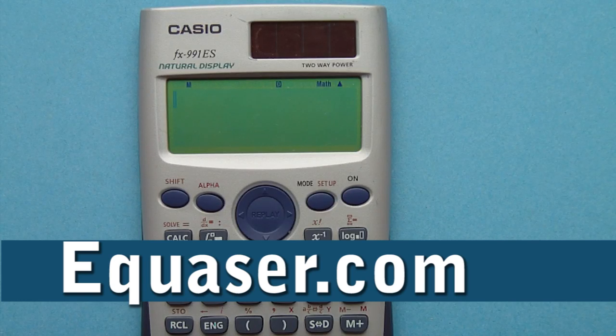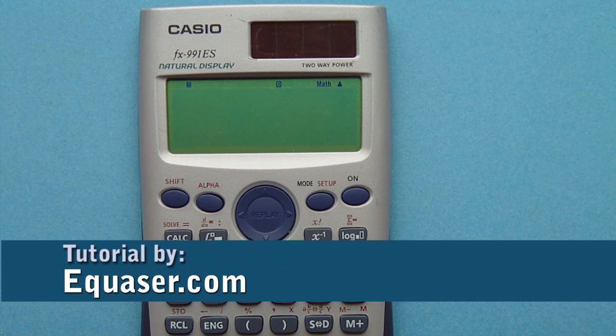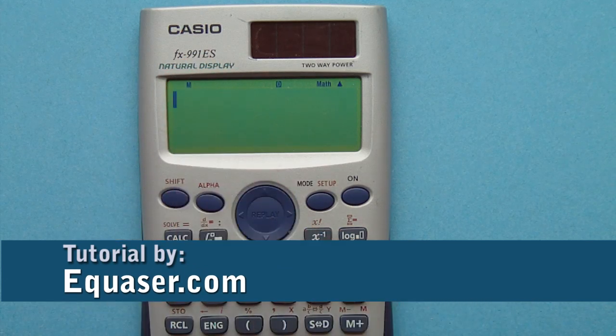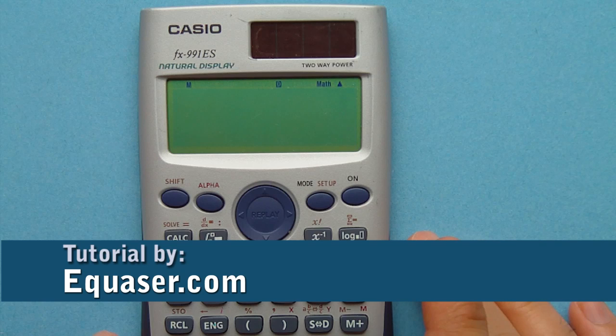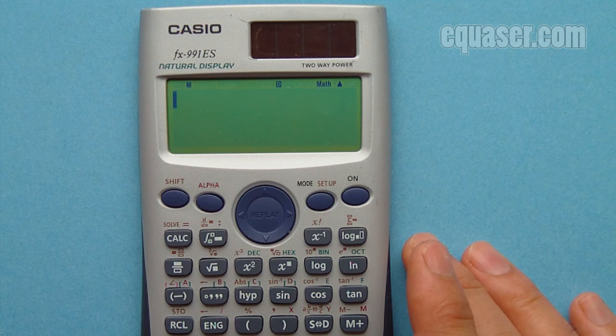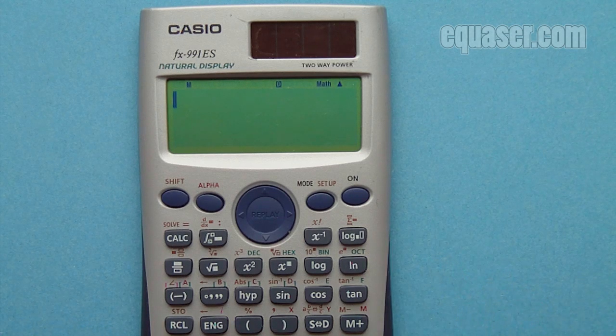Hello and welcome to a tutorial from Equasor.com. In this tutorial we are going to use the Casio FX-991ES scientific calculator to enter a matrix into memory, edit the matrix, and recall the matrix for usage.